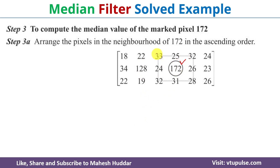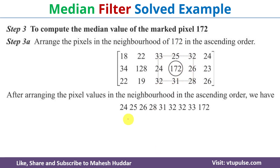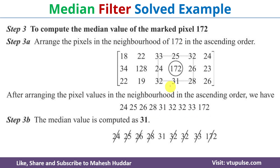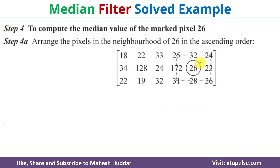Similarly, for the marked pixel 172, we consider this 3x3 matrix. We get 9 values and arrange them in ascending order. Once arranged, we get 31 as the middle value. So the median value for the marked pixel 172 is 31.